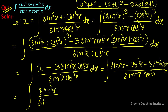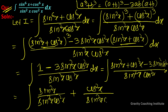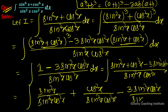और इसके बाद इसको split कर देंगे तो यह होगा: sin²x/(sin²x·cos²x) + cos²x/(sin²x·cos²x) - 3sin²x·cos²x/(sin²x·cos²x) dx.